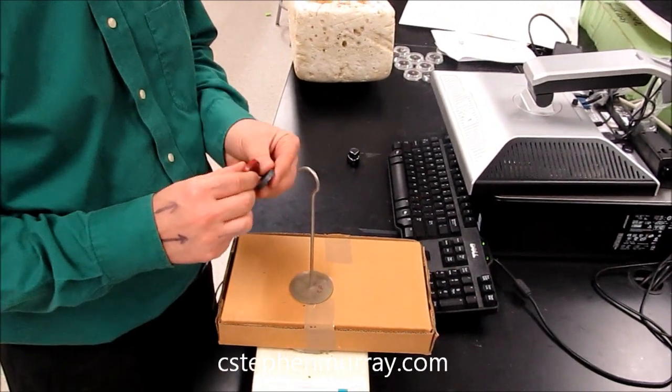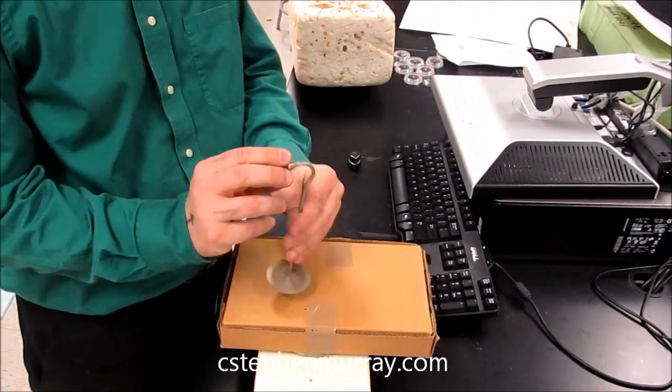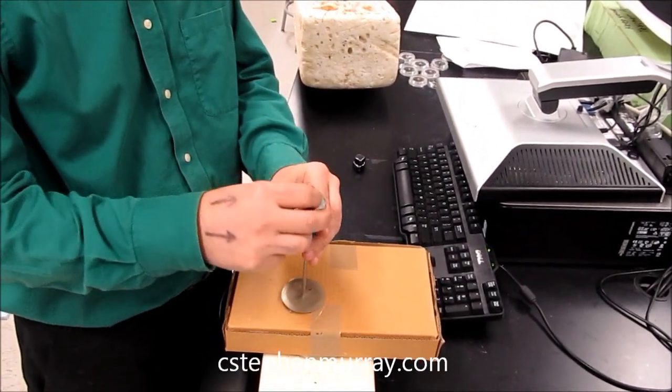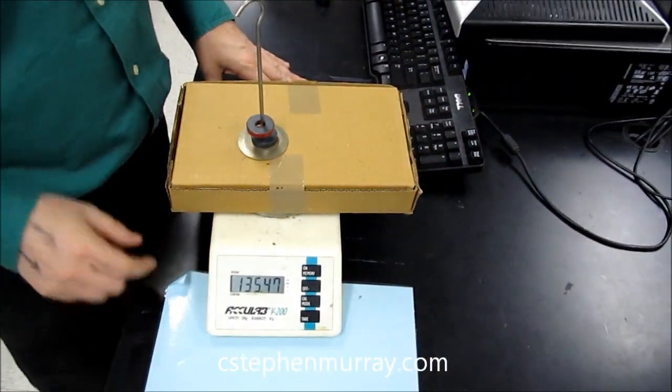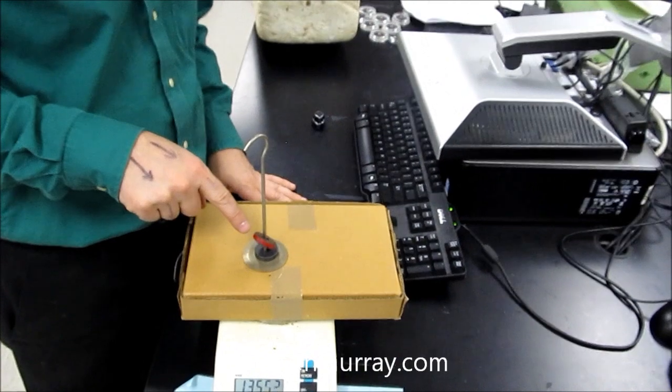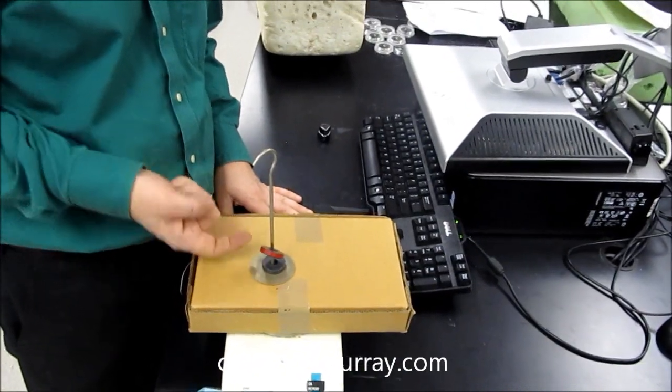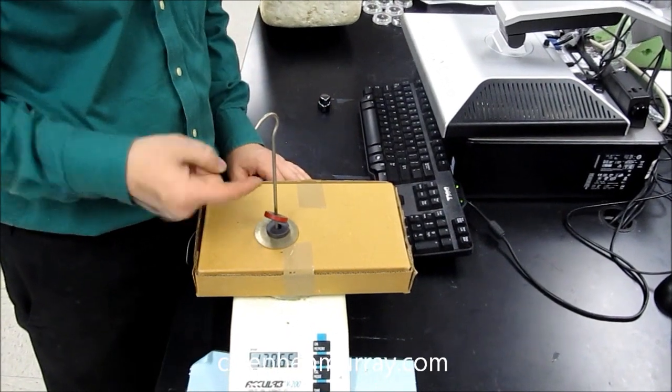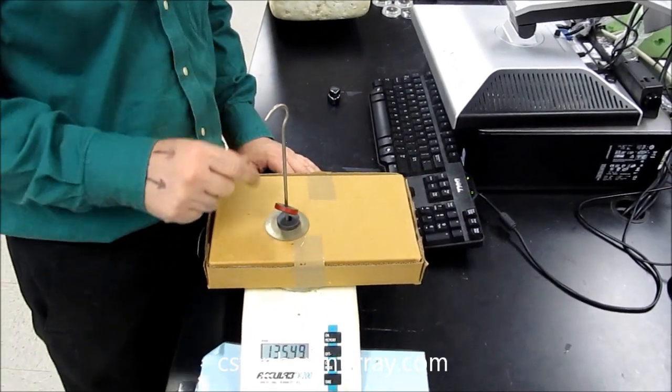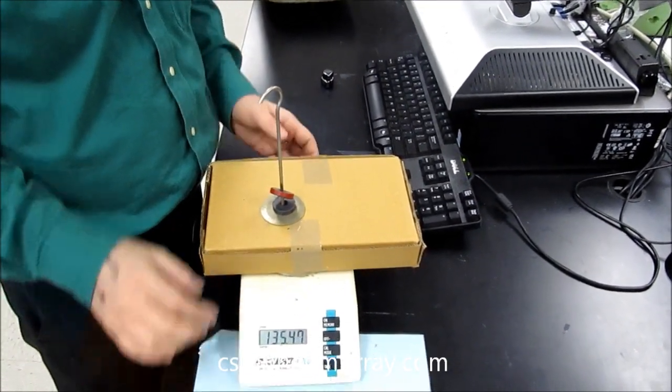Now if I put them maglev'd onto the little hook, there they are. The same force. Now even though the top one is being suspended, it must be supported by the lower magnet. Newton's third law. The magnet pushes up and the other one pushes down with an equal and opposite force, but the mass stays the same.